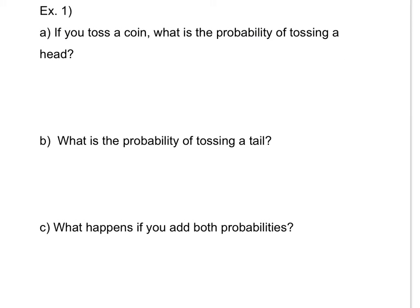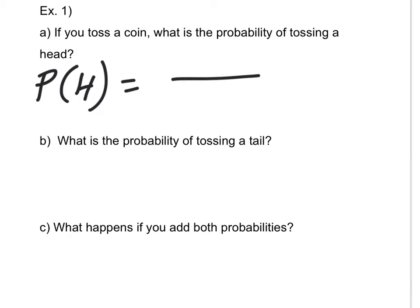Say for example we toss a coin — what is the probability of tossing a head? Here's the way you write this: we say P for probability, then put H in parentheses to represent head, or we could write the word 'head' in the parentheses. This is the notation for probability — you have to write it exactly like this.